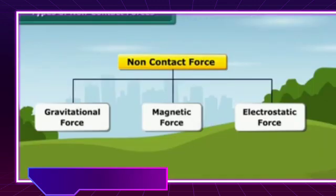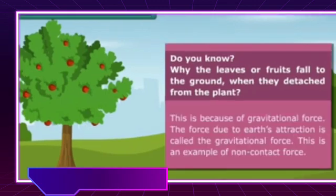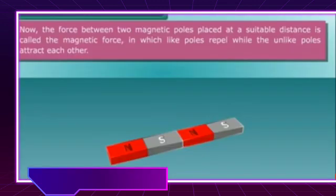Do you know why leaves or fruits fall to the ground when they detach from the plant? This is because of gravitational force. The force due to Earth's attraction is called gravitational force, and this is an example of a non-contact force.